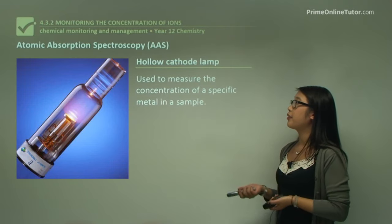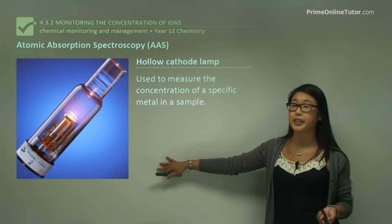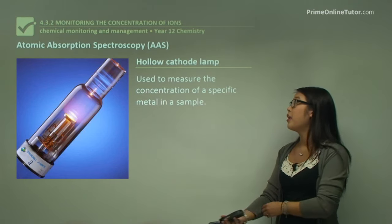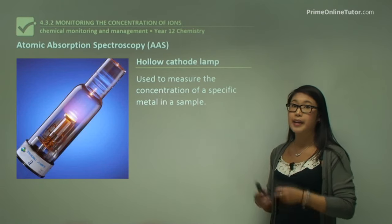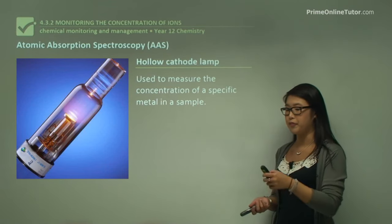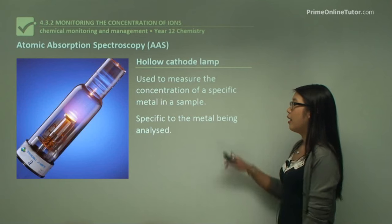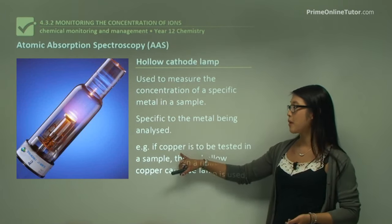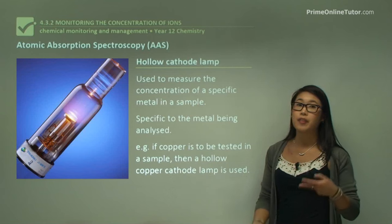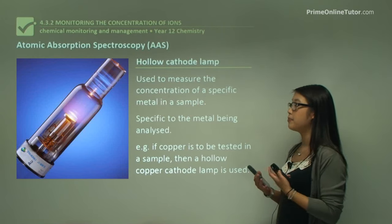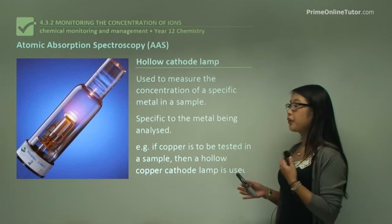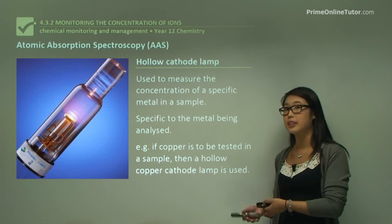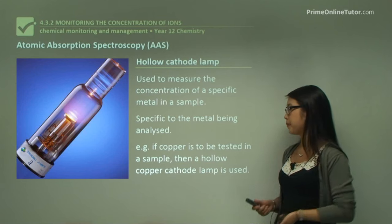The hollow cathode lamp is used to measure the concentrations of metal in a sample and is specific for the type of metal we're looking for. So if we're going to look at copper, we need a lamp made out of copper. If we're using a lamp made out of zinc, that means we must look for zinc in the sample, not the other way around.